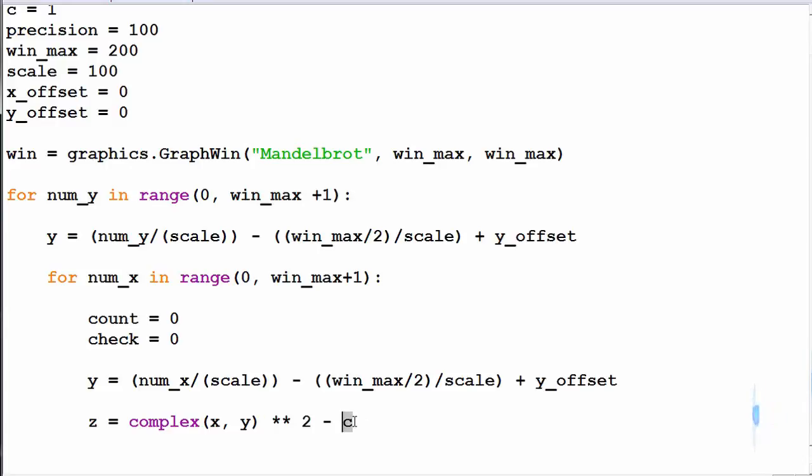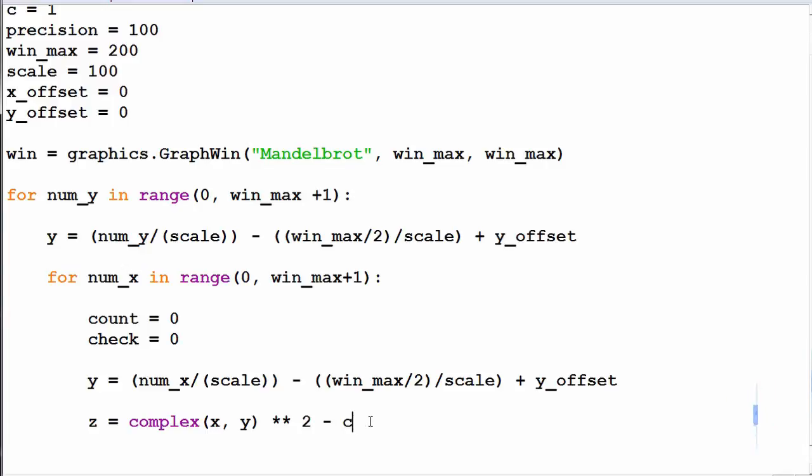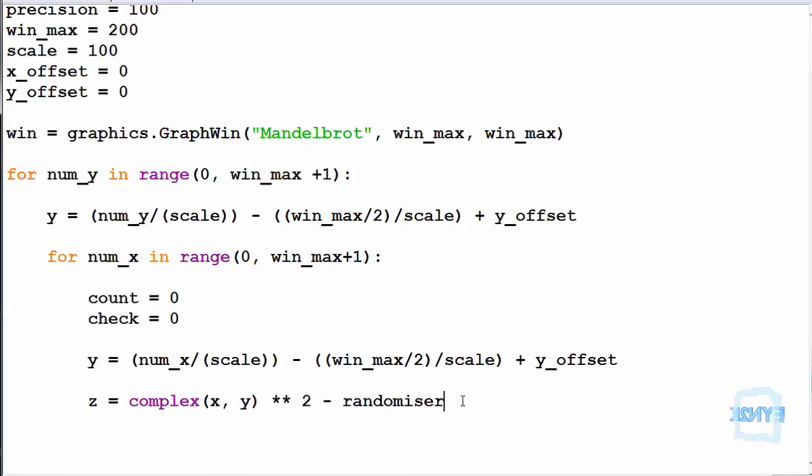This C value on the end here is our randomizer. So if we change C here, let's change this to randomizer because this is what it does. So if we change this value randomizer, it will randomize our Mandelbrot set.